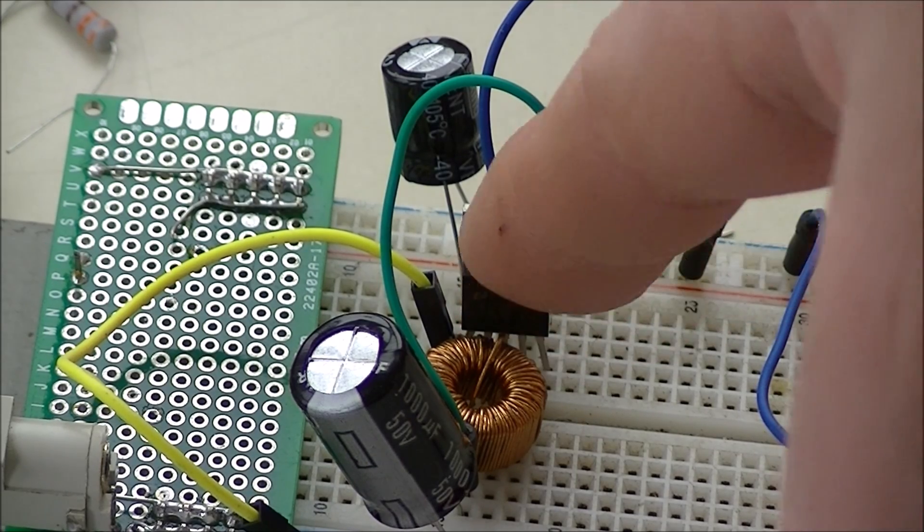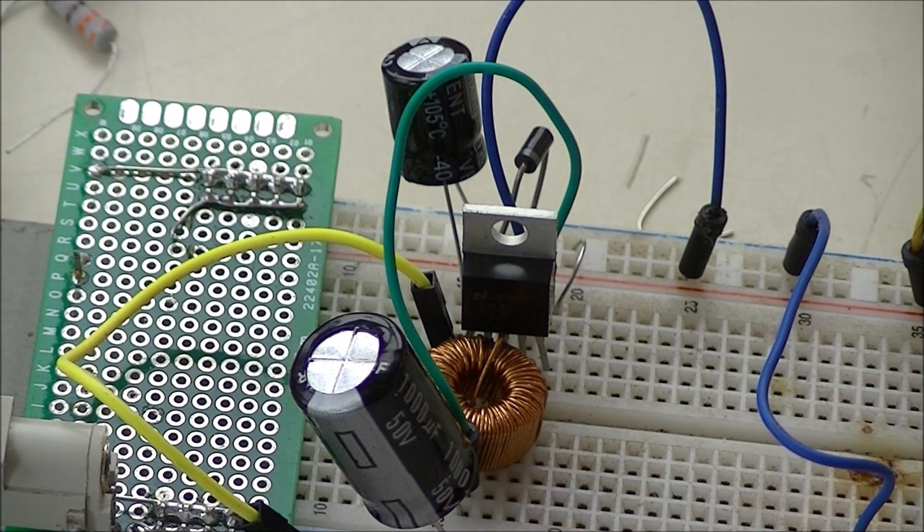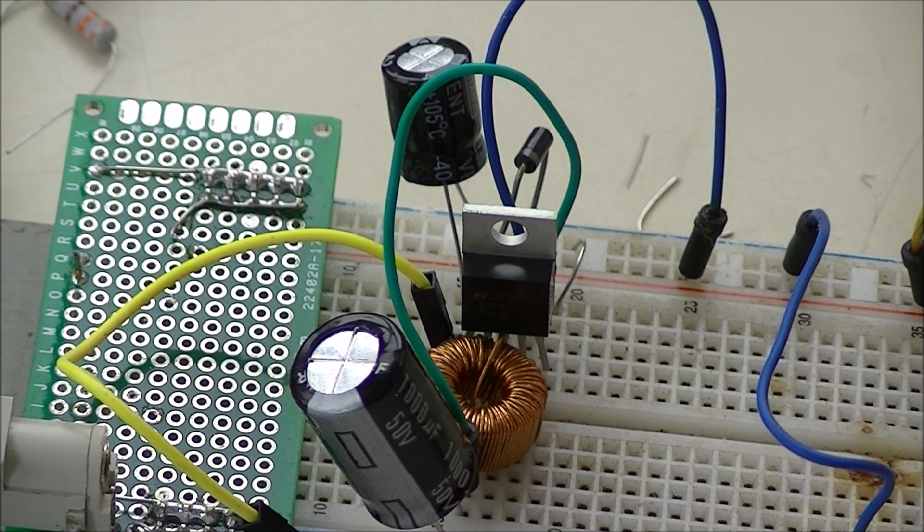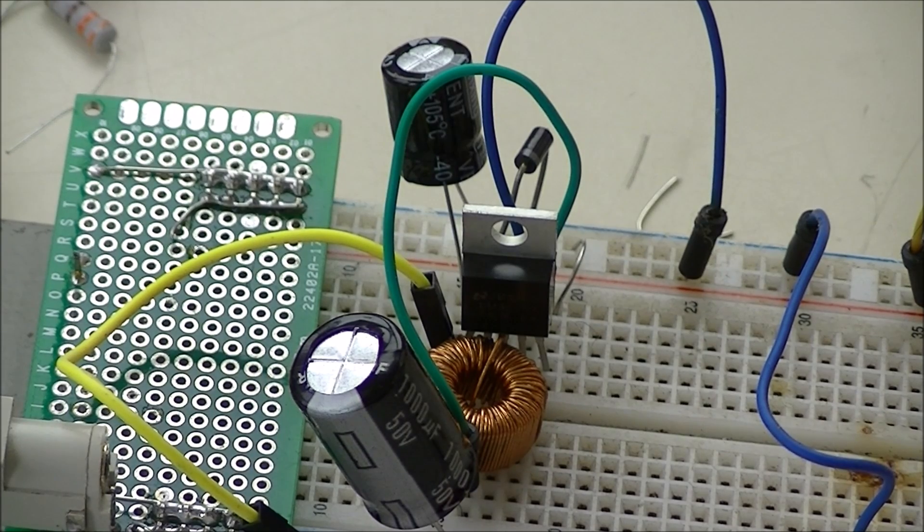It has five pins: input, output, feedback, on-off, and ground. You often ground the on-off just to leave it on. Again, it can be switched on and off with a microcontroller if necessary. So it's a very simple, highly efficient switching regulator.